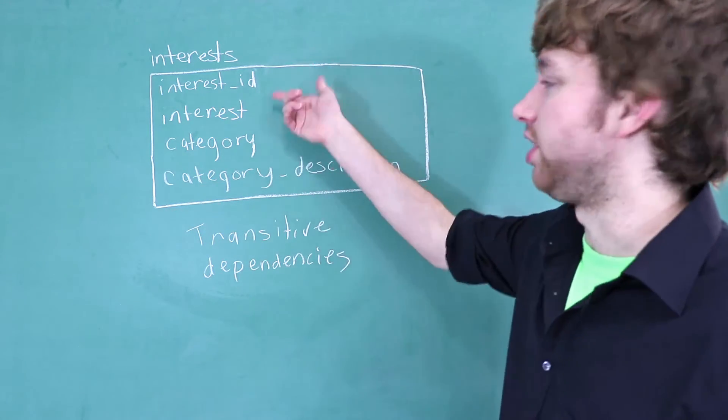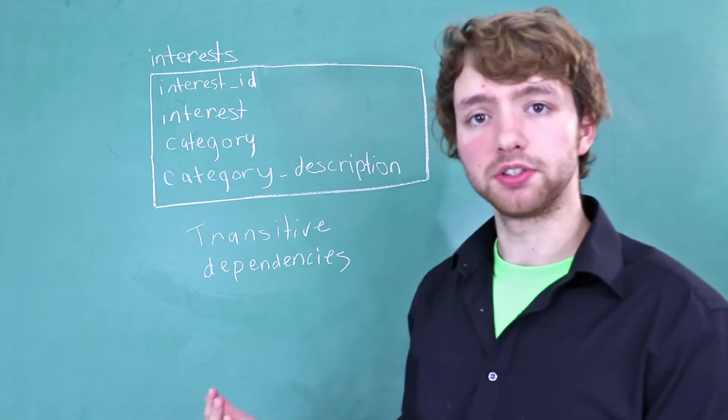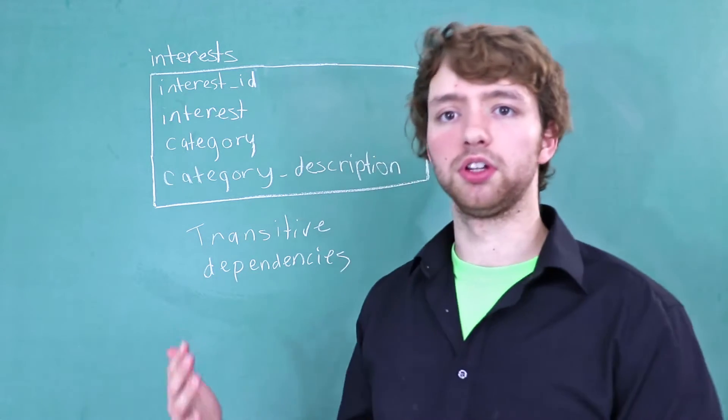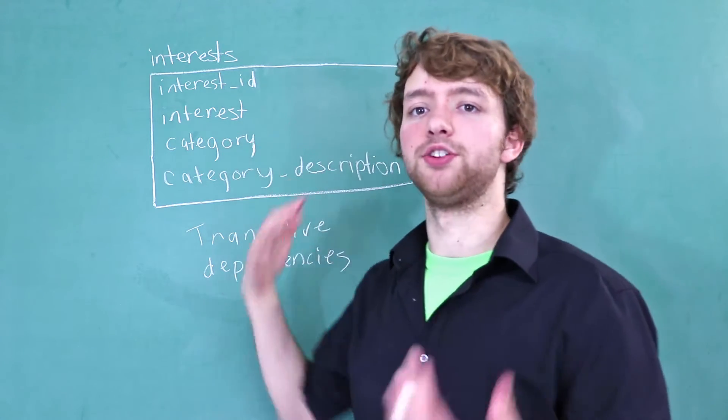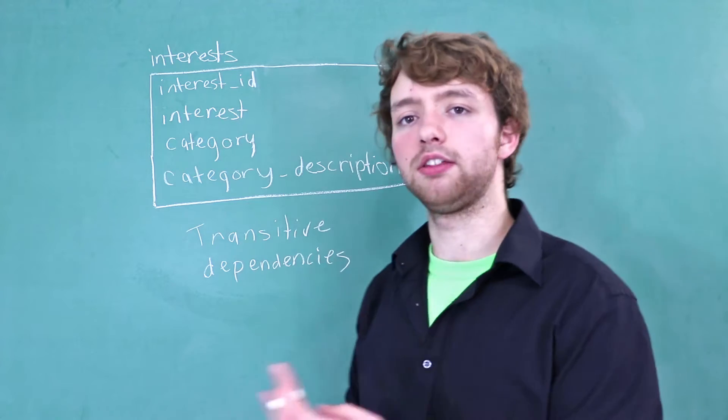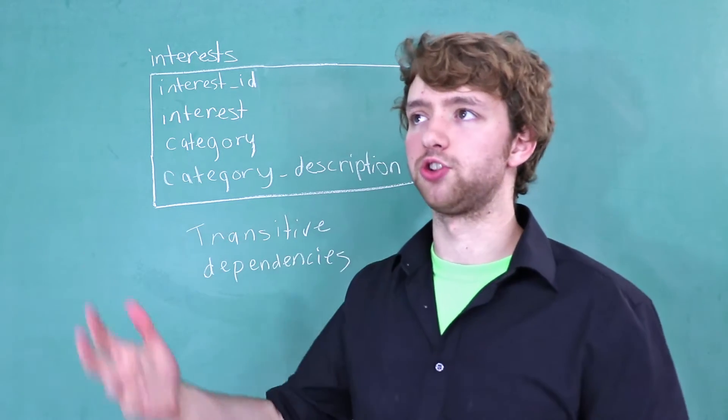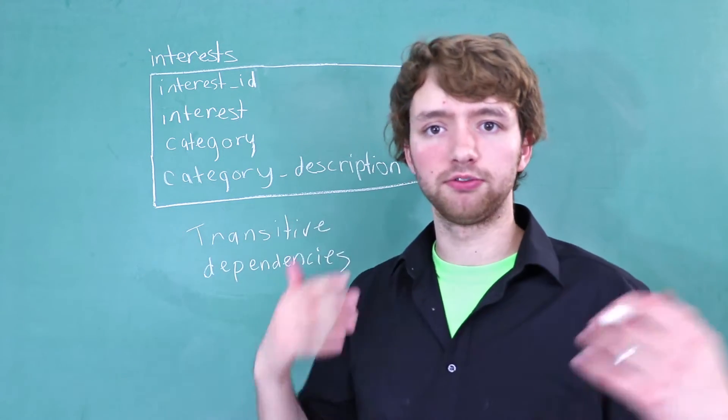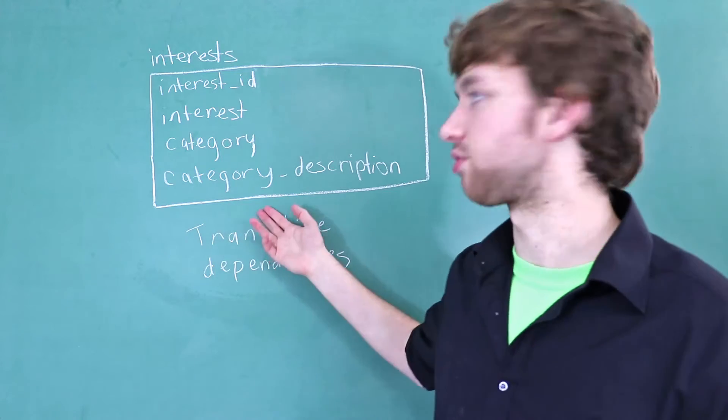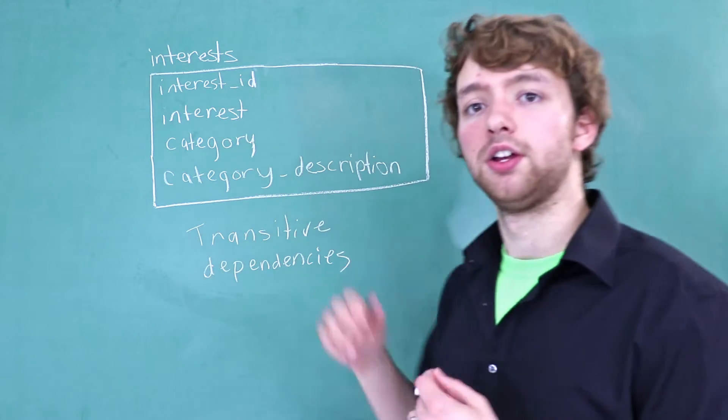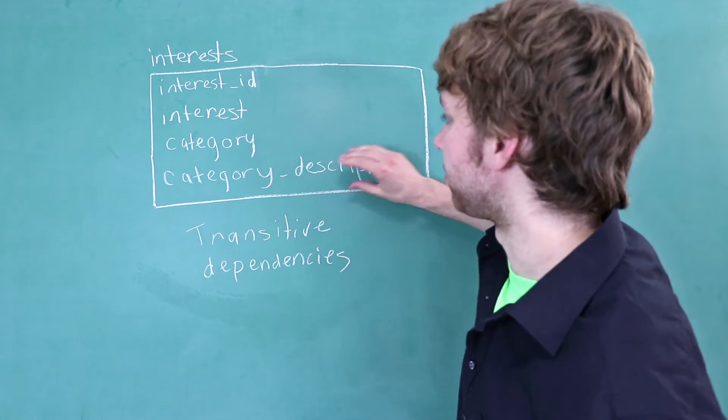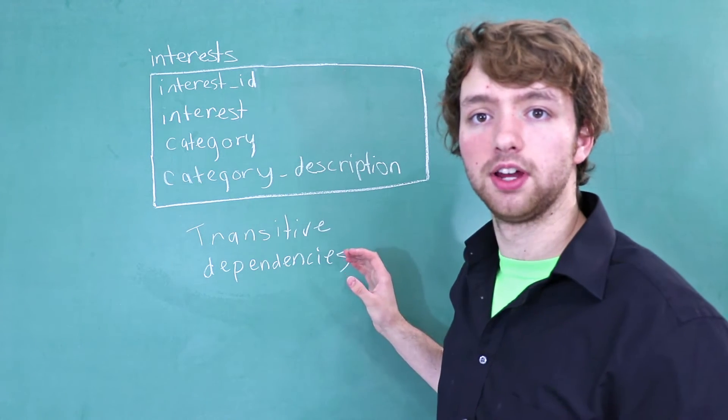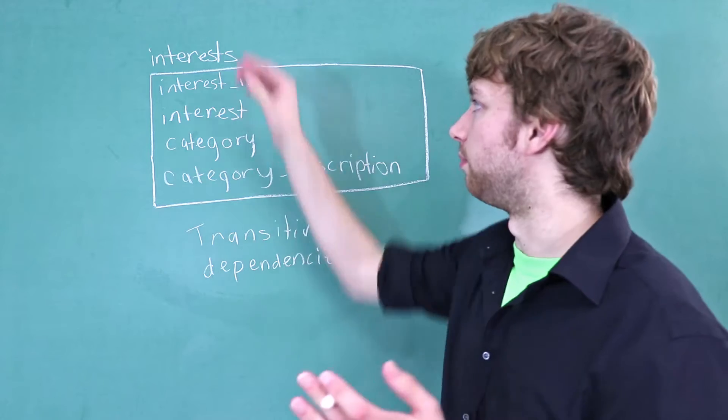Now if we change the interest we're talking about to something else, like acrylic painting, well now we're going to be talking about art. So the category might be art, and the description would say, oh, anything relating to the creation or production of whatever. So you can see when we change the interest, the category description also changes, because we switched the interest from computer science to acrylic painting, and in the process the category description changed.